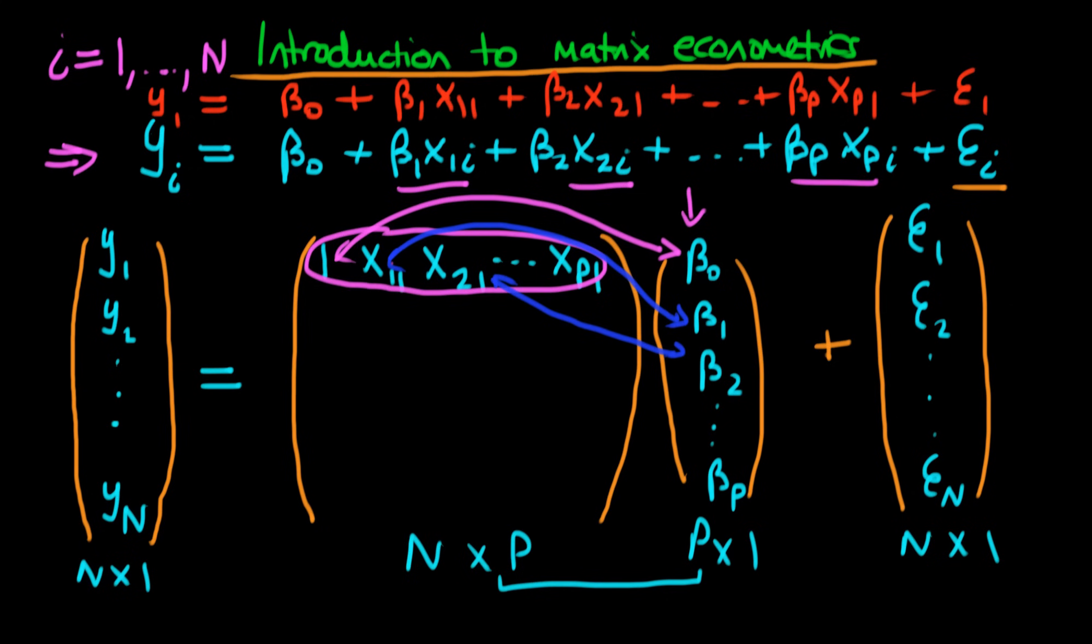So what's the second row of our matrix? Well, it's not hard to figure out, it's just going to be very similar, except now we're going to be talking about having, we're still going to have the first component being 1 because of the fact that we have this constant in our model. The second part is then going to be x12, where the 2 here stands for the fact that we're talking about the second individual. The third part is then going to be x22, and we're going to continue all the way up to xp2.